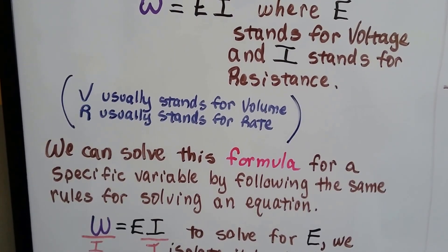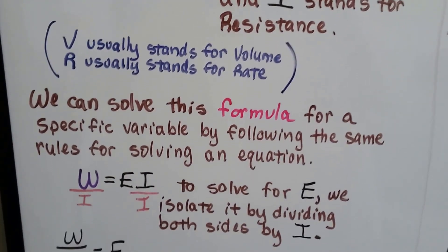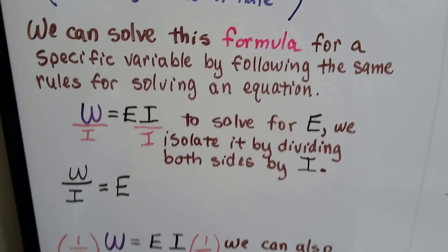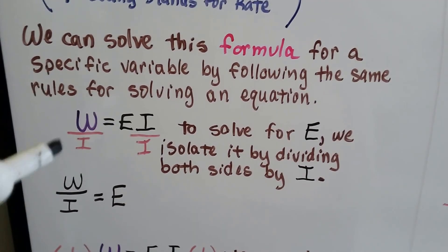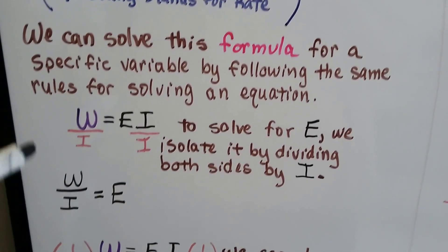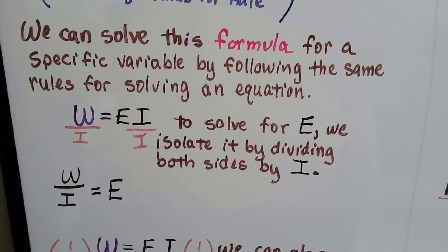We can solve this formula for the specific variable by following the same rules we use for solving an equation. To solve for E, we can isolate the E by dividing both sides by the I. We end up with W divided by I equals E. See? We solved it for E.